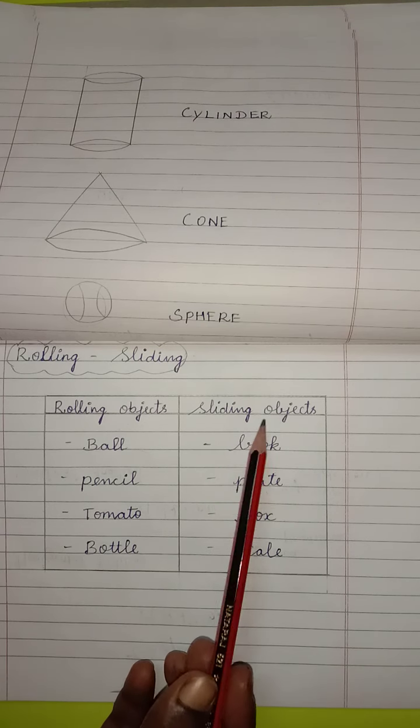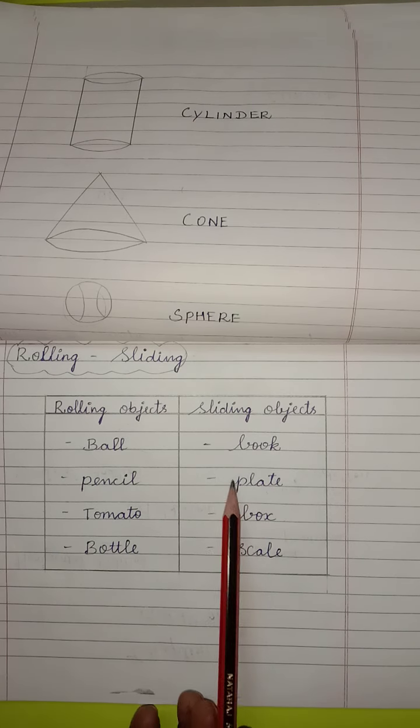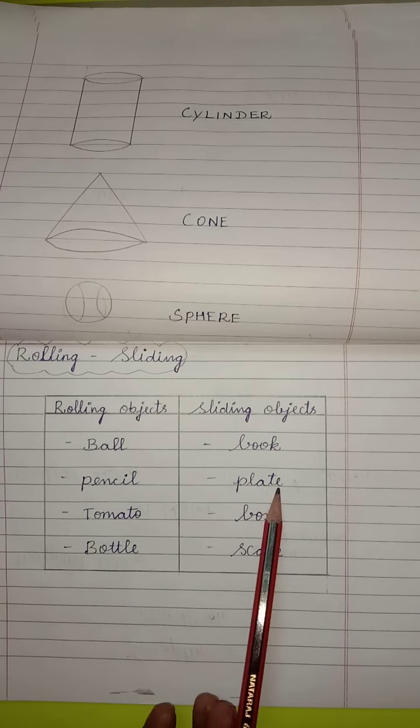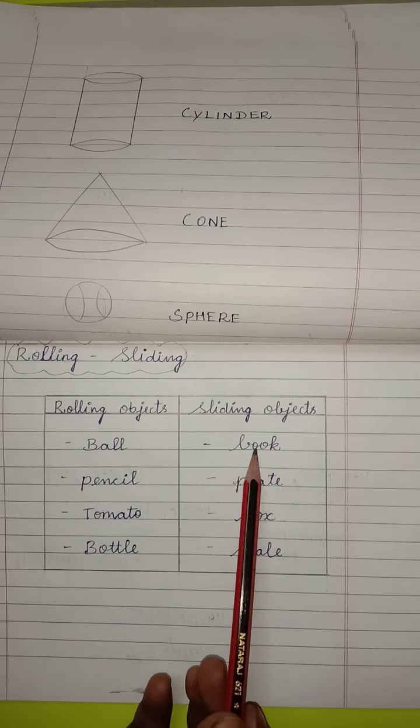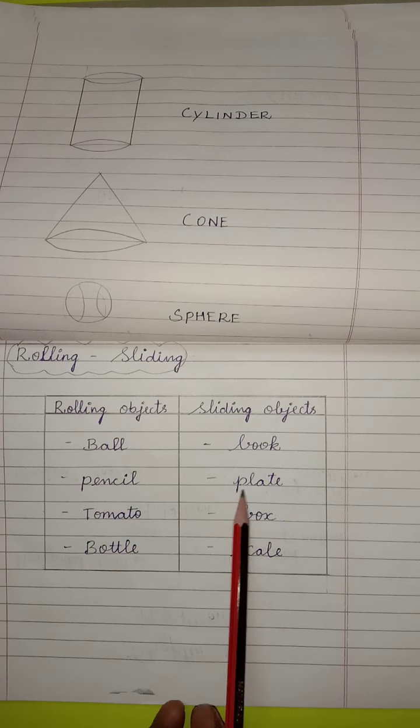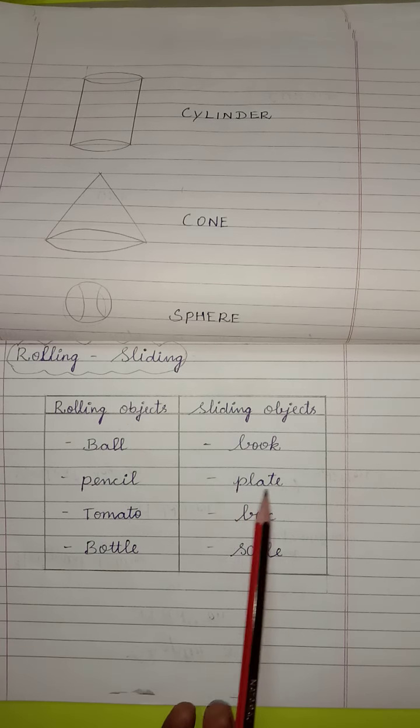Come to sliding objects. Sliding objects are, book, plate, box, scale. B-O-O-K, book. P-L-A-T-E, plate.